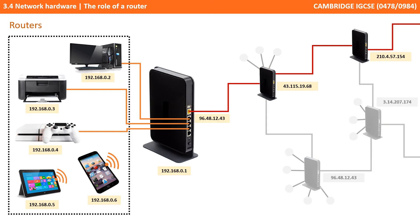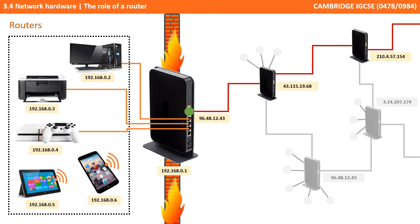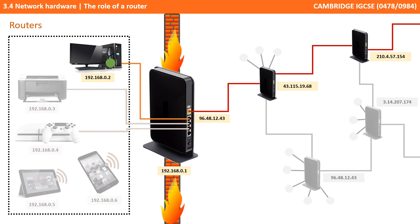Here we see a transmission coming from the outside world being routed via packet switching to our router. When it reaches the router it inspects the contents of the packet. In doing so, modern routers are also able to act as a sort of hardware and software firewall. It then identifies the device on the local network where the transmission needs to go and routes the packet onwards.